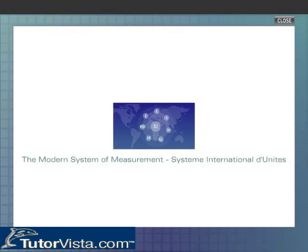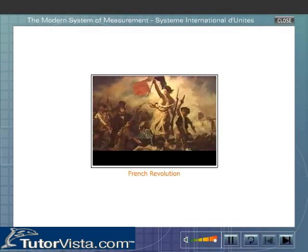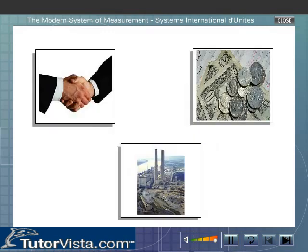The modern system of measurement, Système International d'Unités, originated during the French Revolution. During the period of fast industrialization, the need for a common system of units was felt so that trade among countries could be easy.